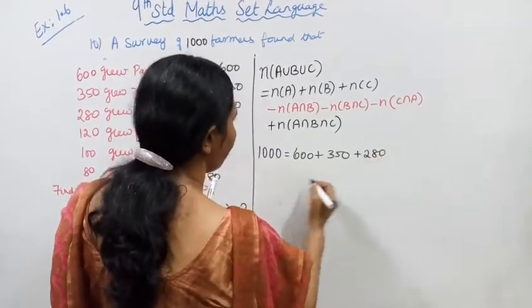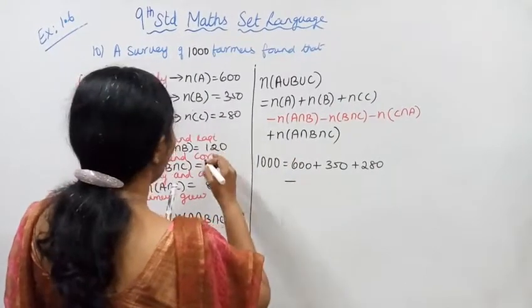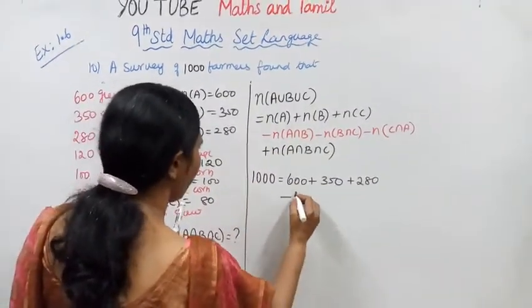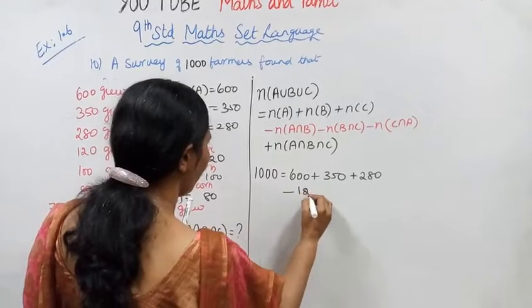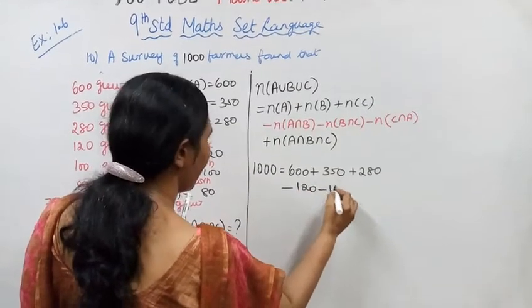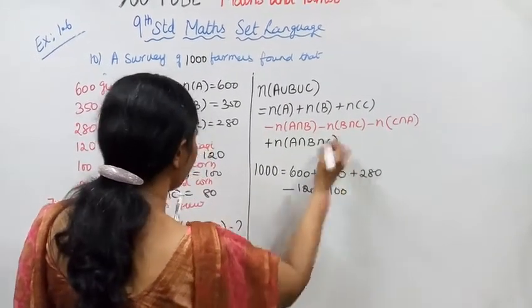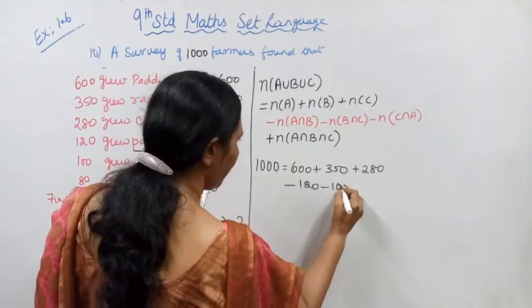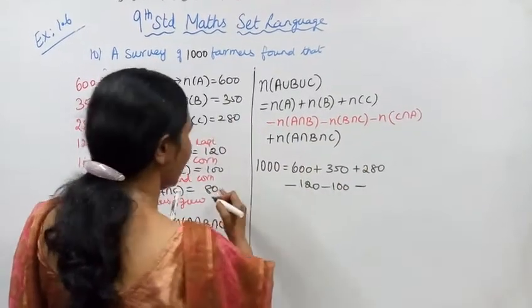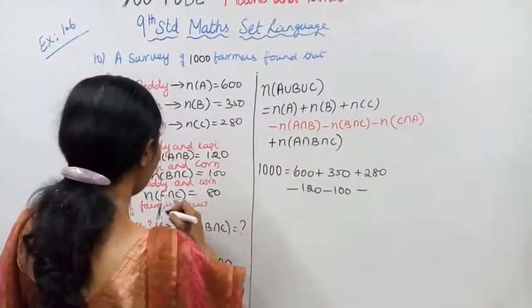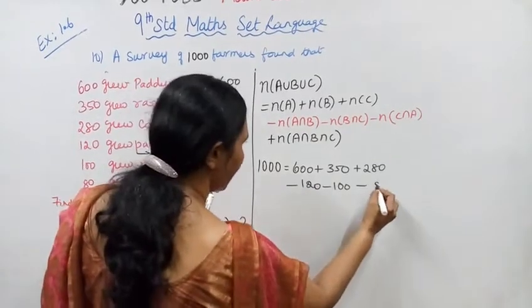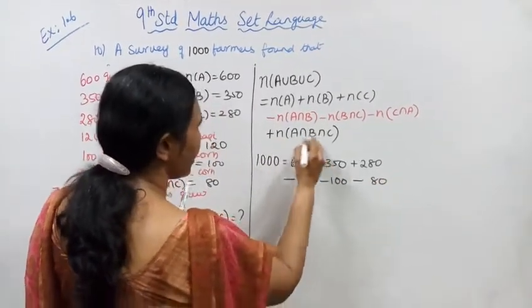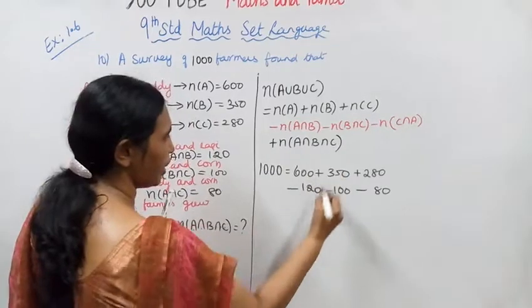Minus: A∩B = 120, minus B∩C = 100, minus C∩A = 80. And N(A∩B∩C) is the unknown value we need to find.